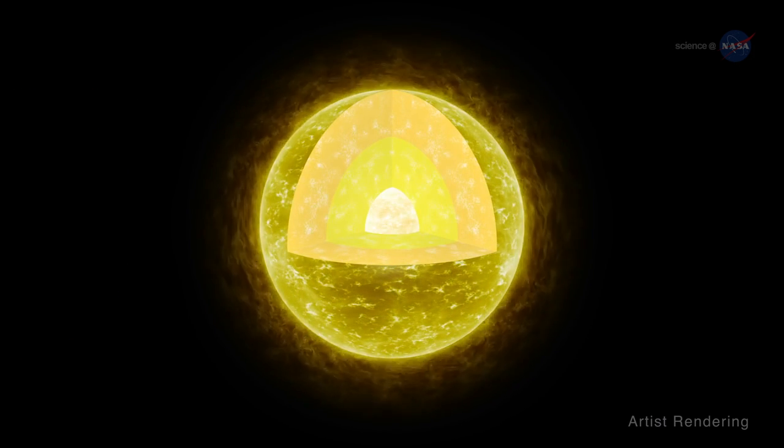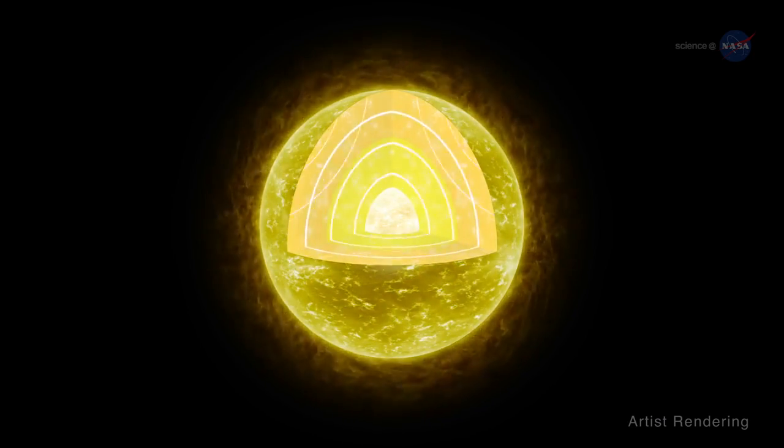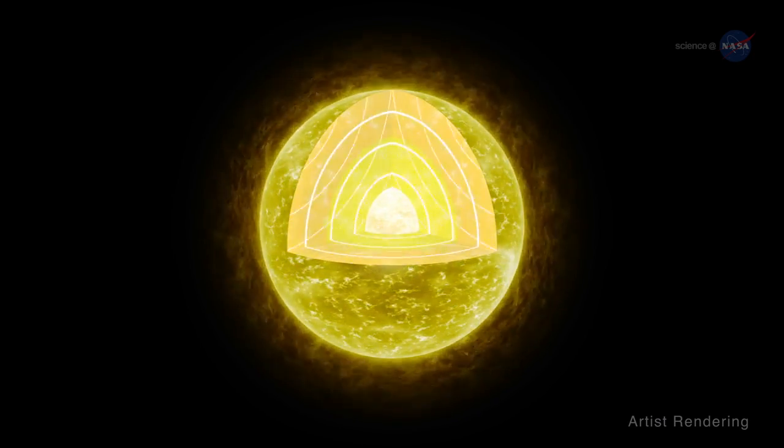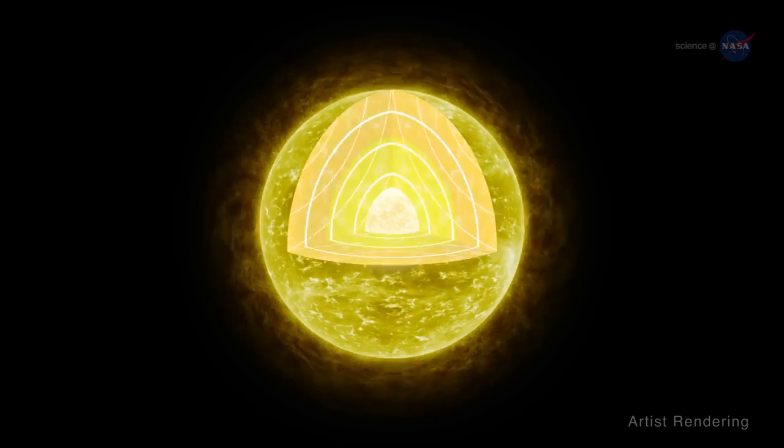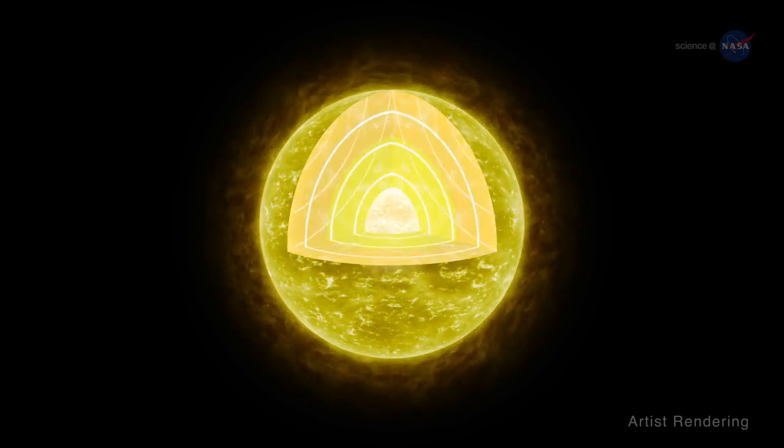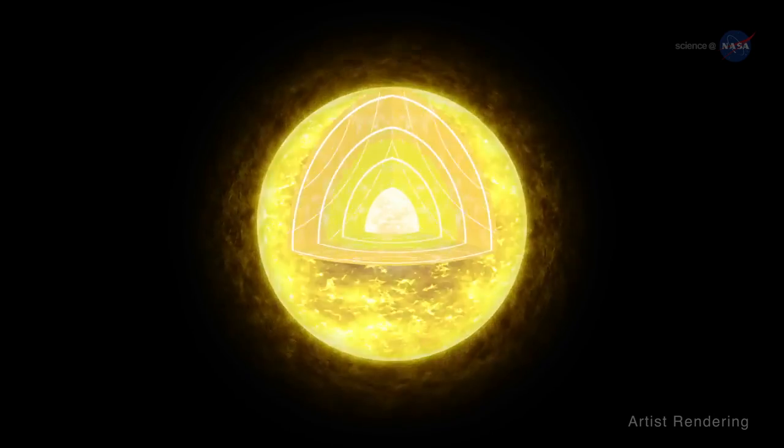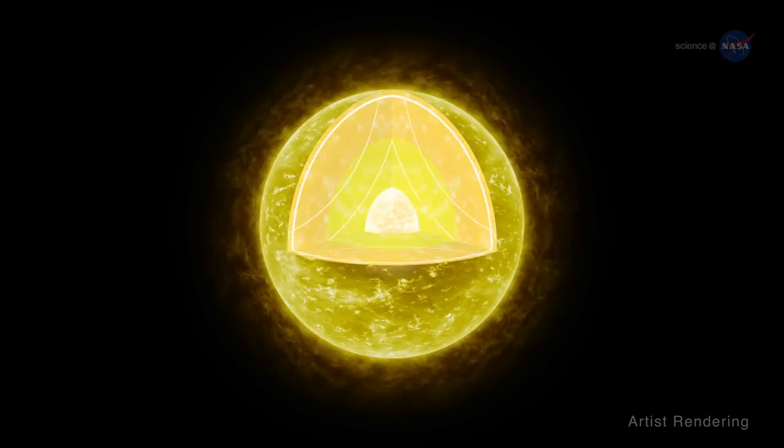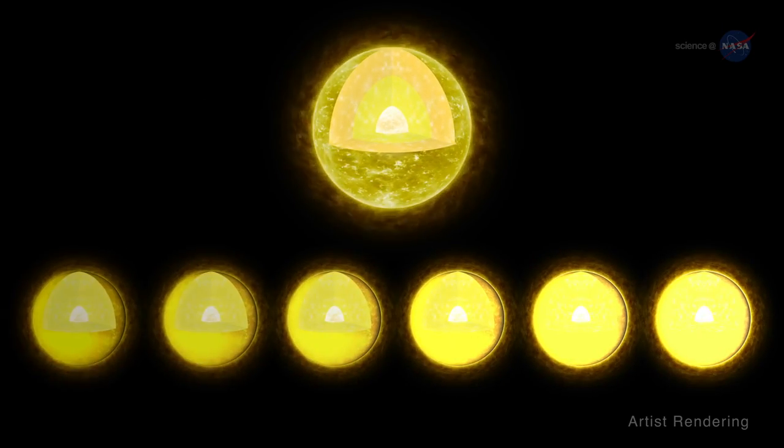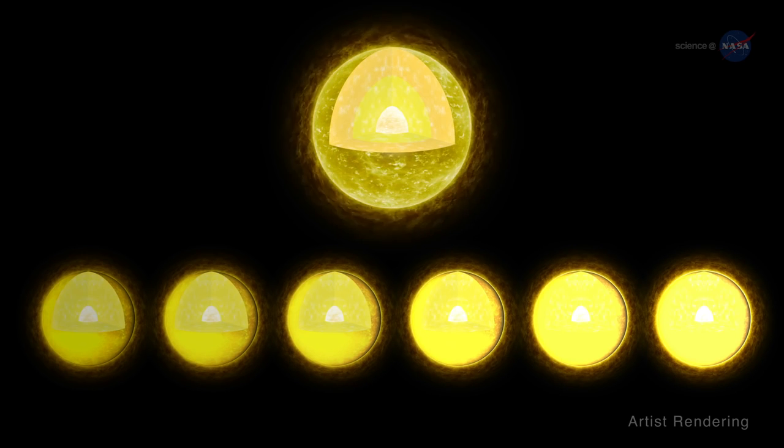There are also waves rippling through the interior of stars—acoustic waves. Stars are rumbling, noisy spheres of hot gas. Sound waves bounce around the interior and cause the stellar surface to vibrate, much like the head of a drum. These vibrations reveal themselves as fluctuations in a star's brightness.